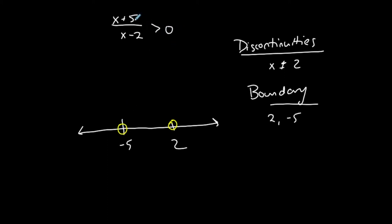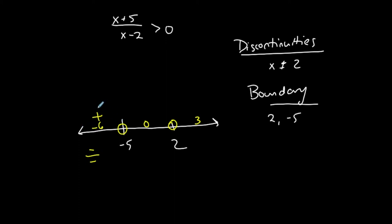Greater than zero implies positive, so I want to find all intervals where the left-hand side is positive. I'll test points in each interval: negative six to the left of negative five, zero in between negative five and two, and three to the right of two. Plugging negative six into the numerator gives negative six plus five, which is negative. The denominator gives negative six minus two, also negative. Negative divided by negative is positive, so this interval creates positive values — that's what I want.